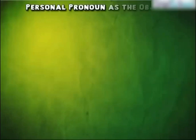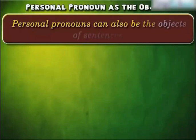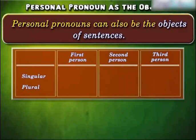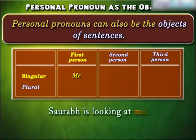We have seen how personal pronouns can be the subjects of sentences. Personal pronouns can also be the objects of sentences. The following table lists the different forms of personal pronouns when they are the objects of sentences. In the singular form, the first person form of the personal pronoun as the object will be 'me'. In the sentence 'Saurabh is looking at me', 'me' is the object.